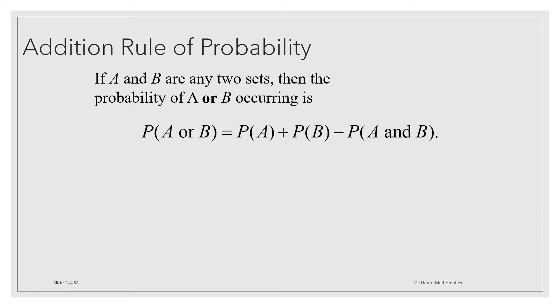Well, the same idea works for probability. In fact, it gives us the addition rule of probability, which says that the probability of A or B happening is the probability of A plus the probability of B minus the probability of both.